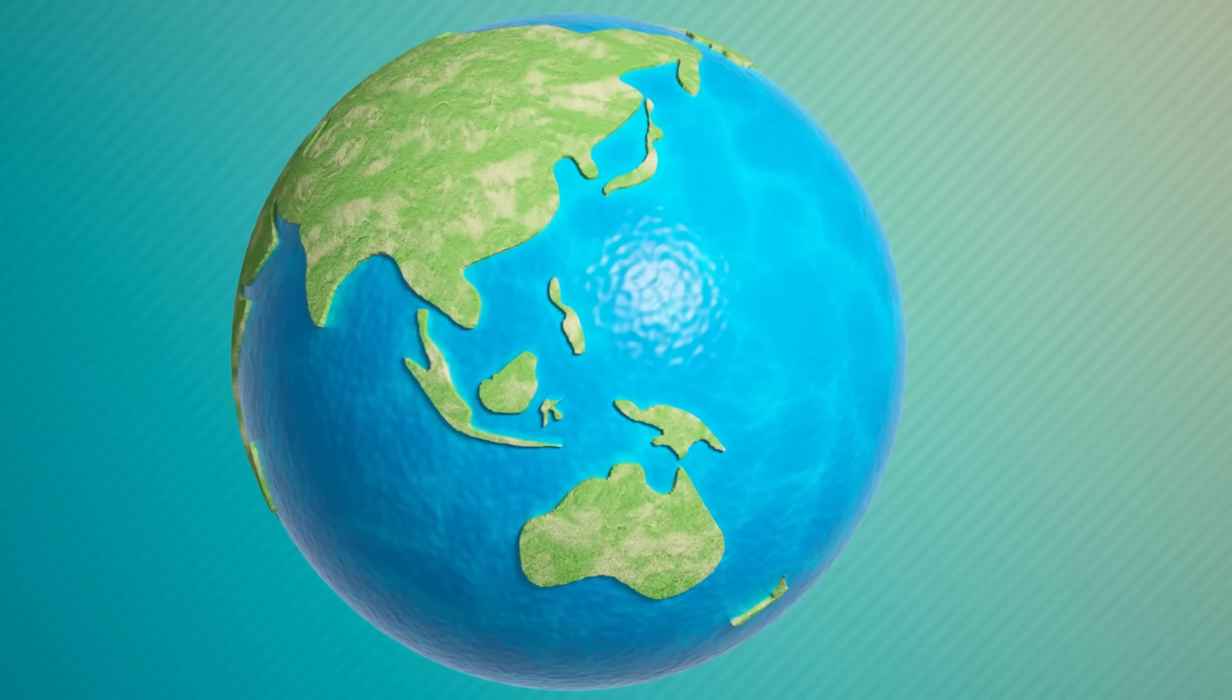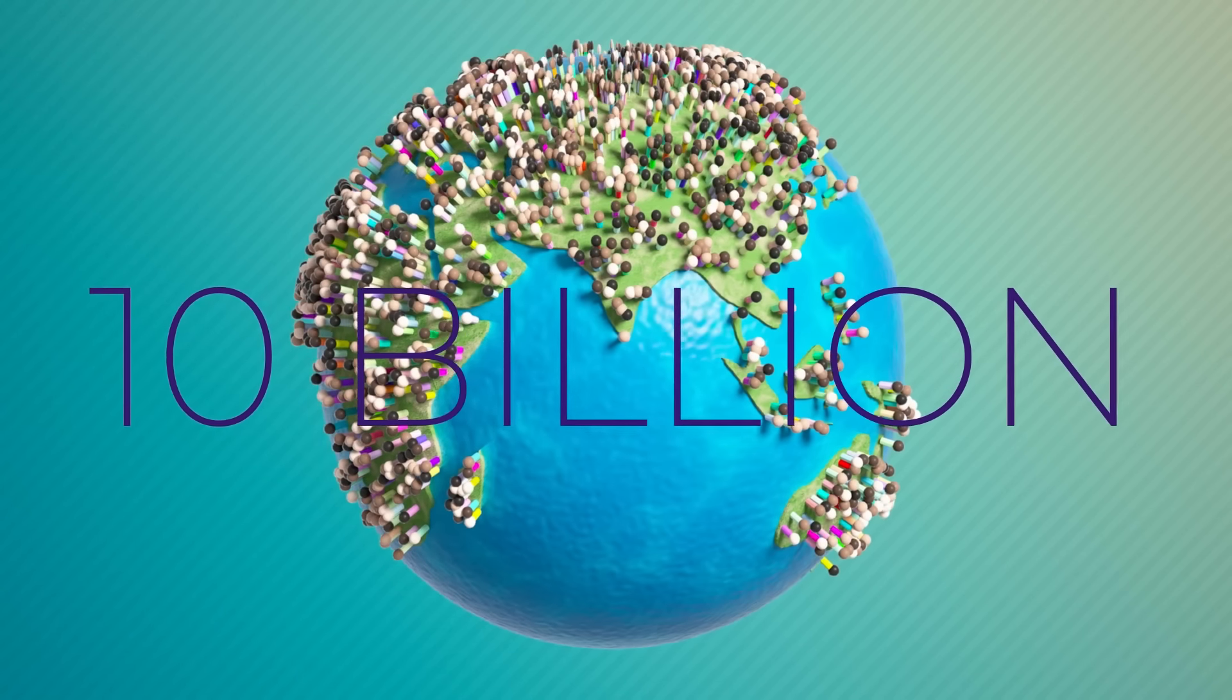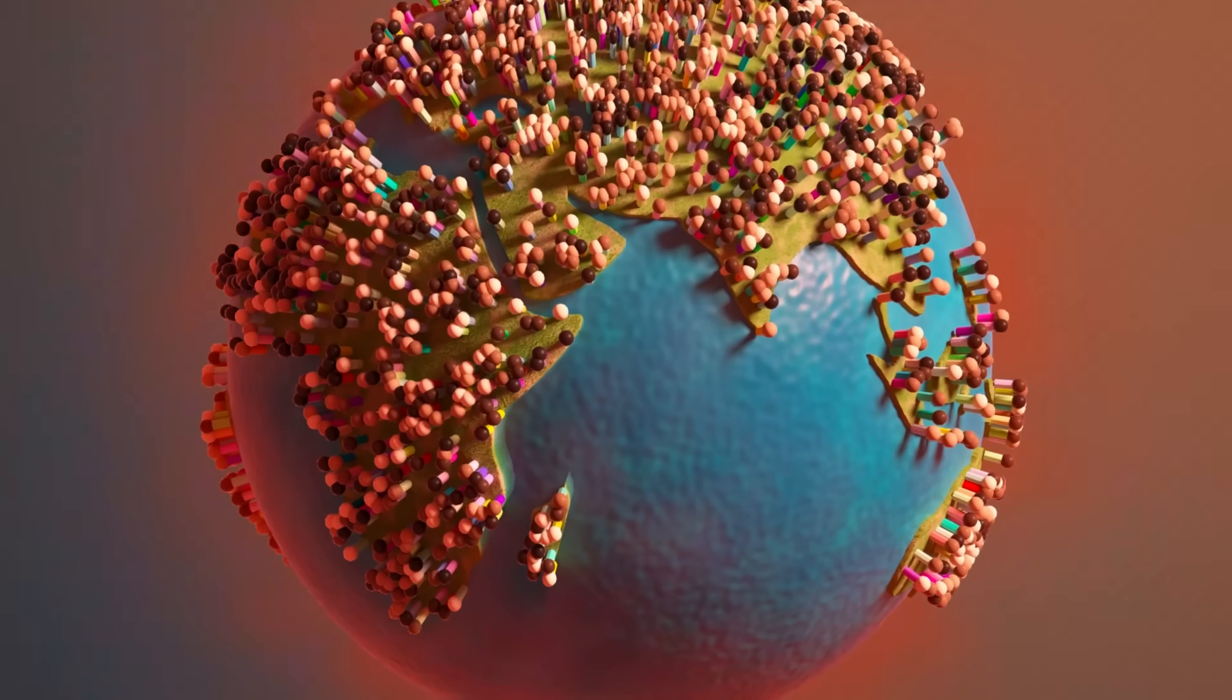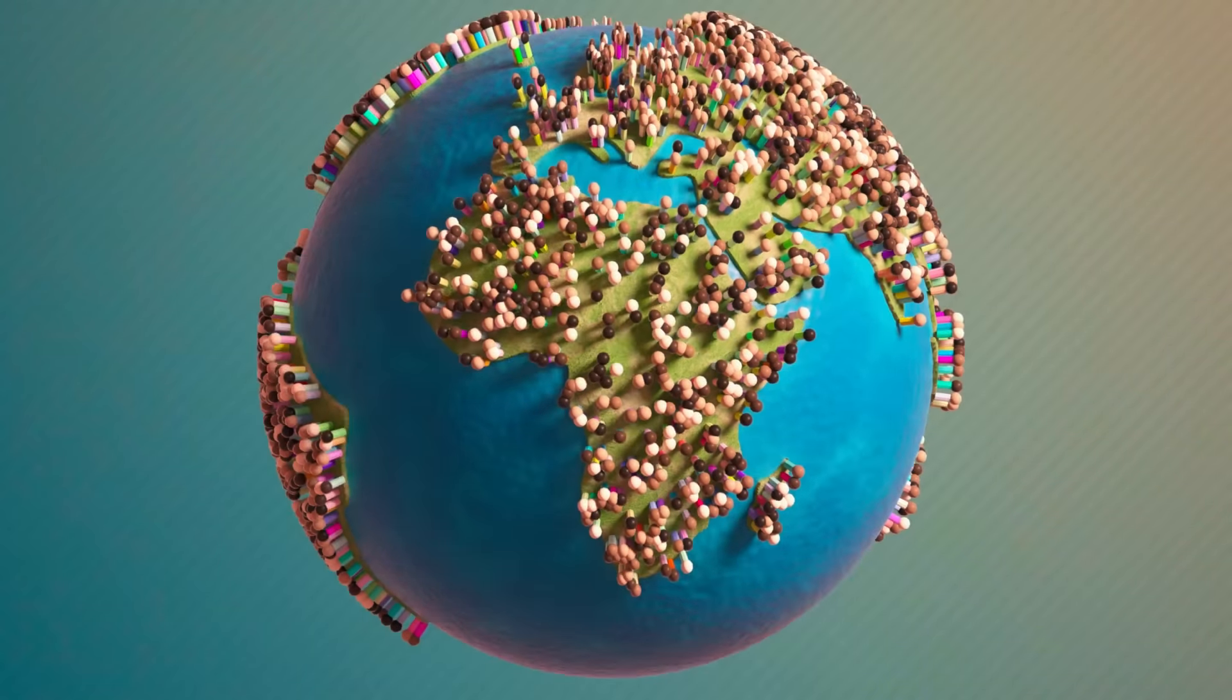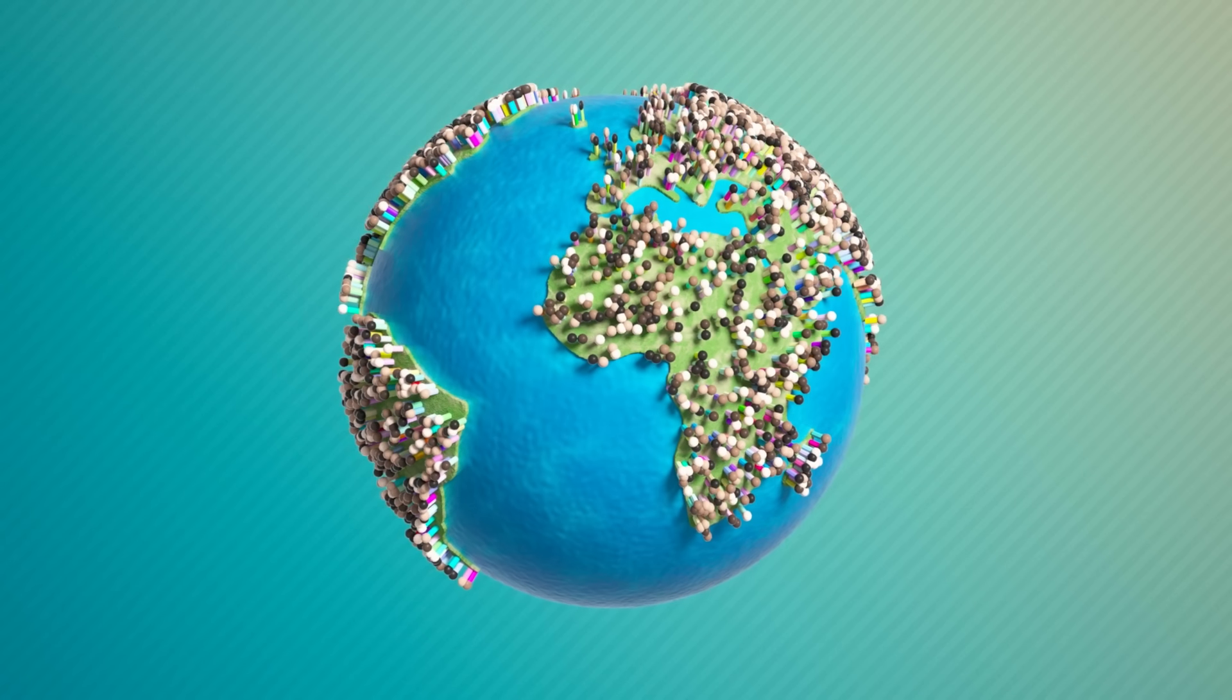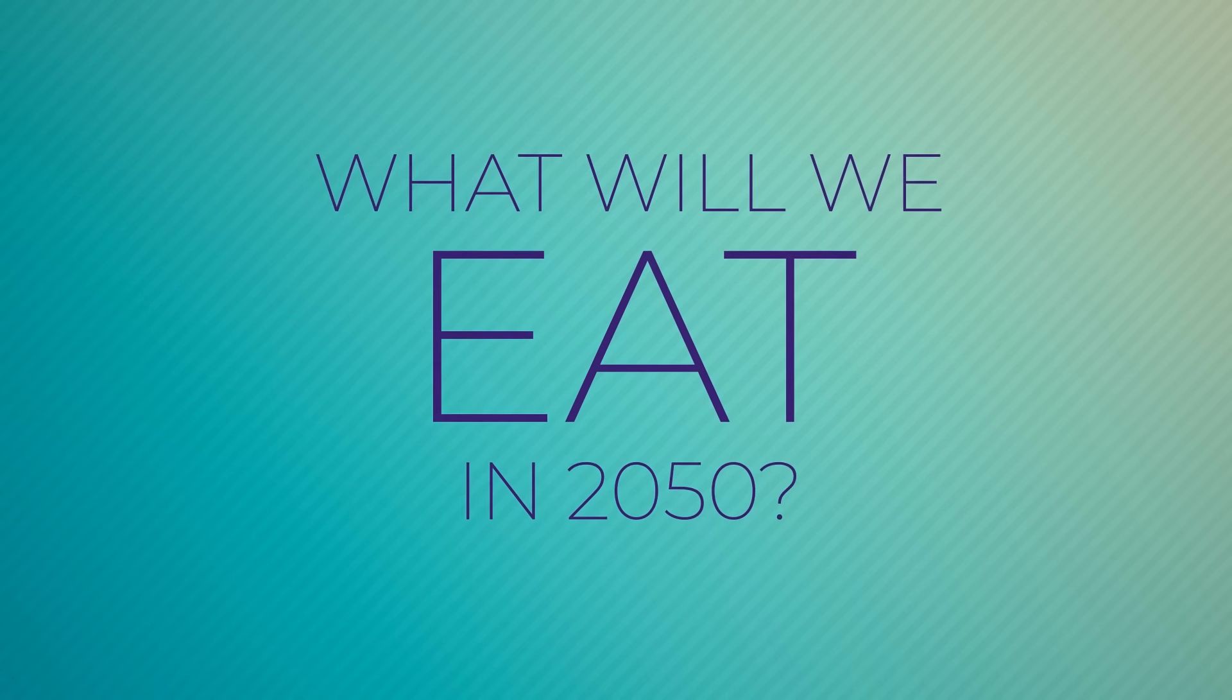By the year 2050, the world population will likely be close to 10 billion people. At the same time, climate change and other crises threaten food production. Will we be able to feed nearly 10 billion people under these conditions? And what will our food look like?